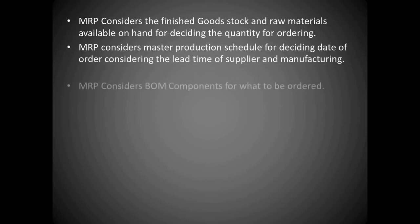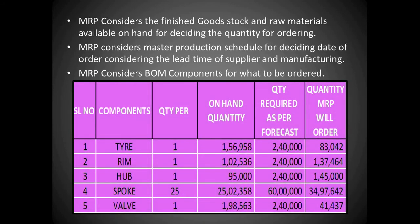MRP considers the finished goods stock and raw materials available on hand for deciding the quantity to be ordered. As you can see in our video: components, quantity per, on-hand quantity, quantity required as per forecast, and the quantity MRP will order. MRP, as I told you, it will take the on-hand stock of finished goods as well. Assume you don't have any stock; we have only raw materials. These are the raw materials we have on-hand quantity. As per forecast, we are short by quantity MRP will order. For that quantity, MRP will order so that we are short by that quantity.